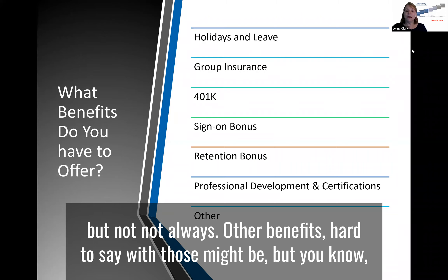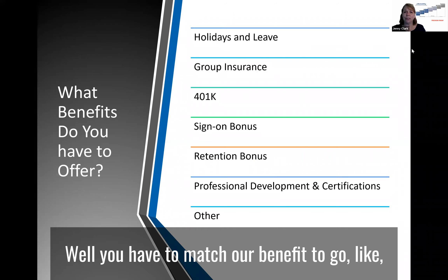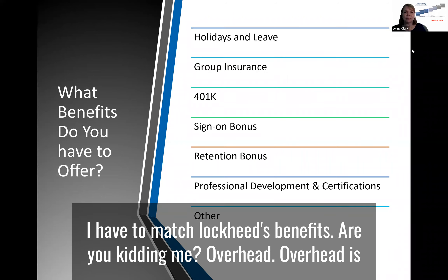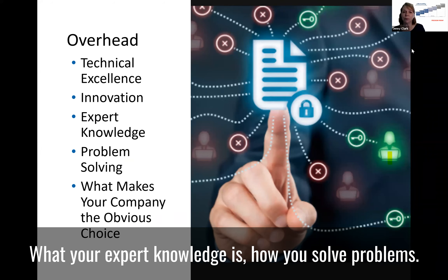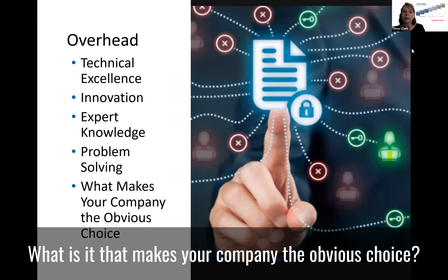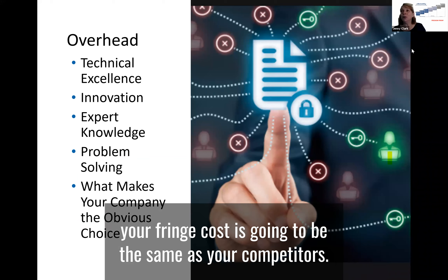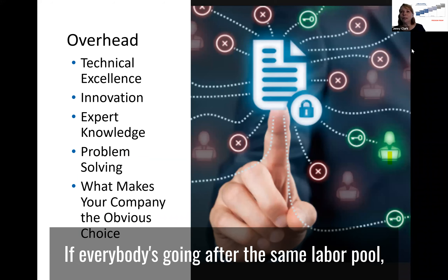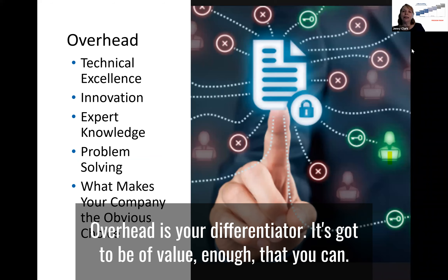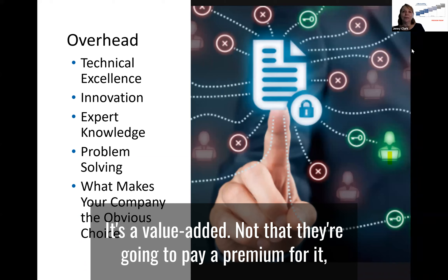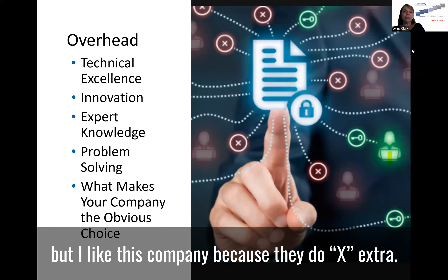Other benefits are hard to predict, but everybody has their differentiators. A trend right now is that when bidding on a team, they may say you have to match all their benefits — and you might be thinking, 'I have to match Lockheed's benefits?' Overhead is what makes you unique as a company — your technical expertise, innovation, expert knowledge, and how you solve problems. Overhead is your big differentiator. If everybody's bidding the same fringe package and going after the same labor pool, their costs will be similar. Overhead is where you stand out, adding enough value that clients say, 'I like this company because they do X extra.'